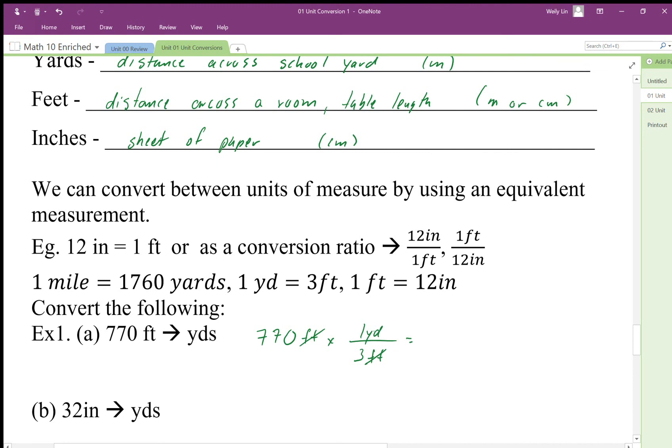When we do this calculation, 770 times on top, divide on bottom, we end up with 770 divided by 3.